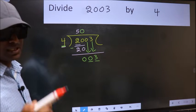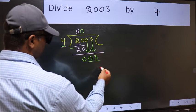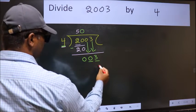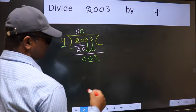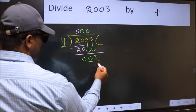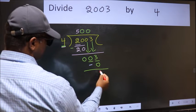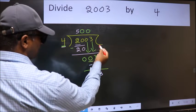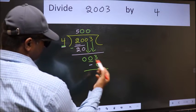4 is larger than 3, so what we should do is take 0. So 4 into 0 is 0. Now we should subtract: 3 minus 0. Over here, we did not bring any number down, and 3 is smaller than 4.